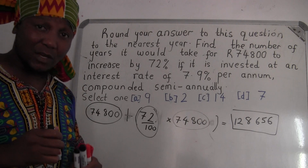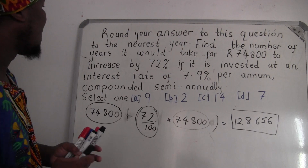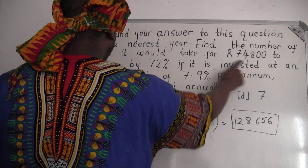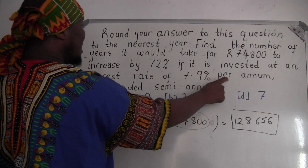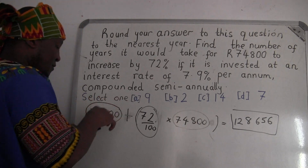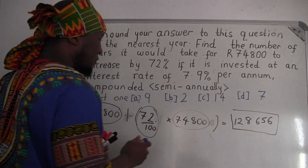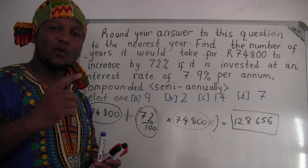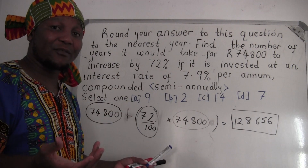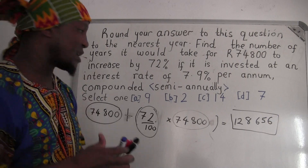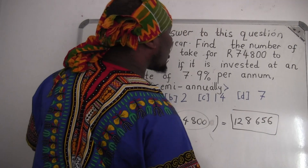I'm just showing you this so you understand the question. So if it is invested at an interest rate of 7.9% per annum compounded semi-annual — what is compounded semi-annual? When you say annual, it means one. Semi means half, so semi-annual means two halves to make one. So for semi-annual we're going to use two.